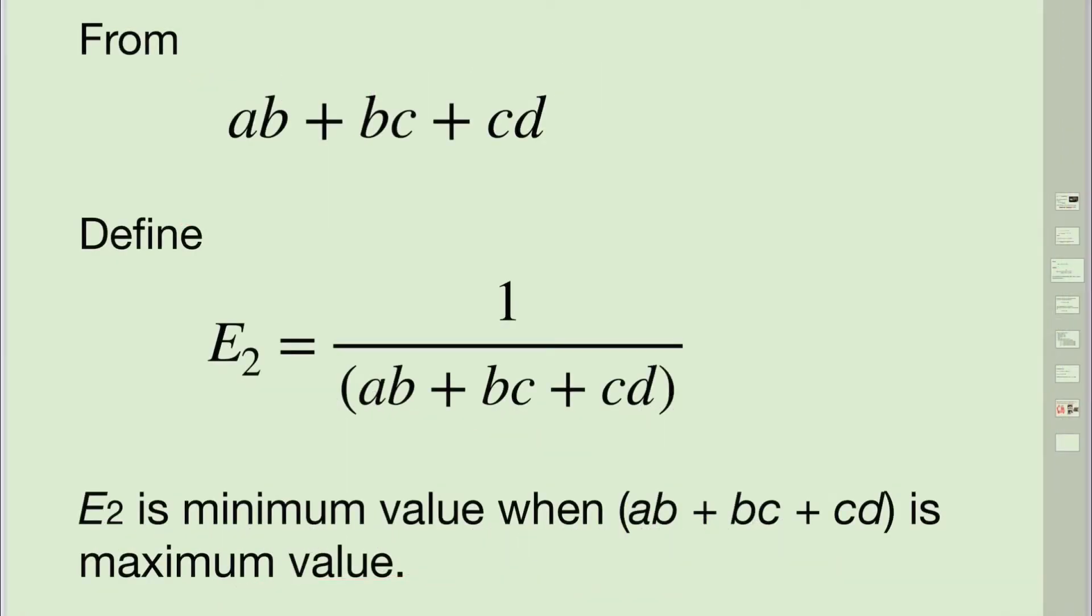On the other hand, in order to find the maximum value of ab + bc + cd, we define error 2 equals 1 / (ab + bc + cd). This is to ensure that error 2 is minimum when ab + bc + cd is maximum.